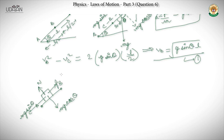This is a very common misconception — friction opposes the relative motion between two bodies, not just the motion of the body. When you walk, it's friction that helps you move forward. Friction opposes the tendency or actual relative motion. In this case the block has relative motion, so kinetic friction acts, and its value equals μN.